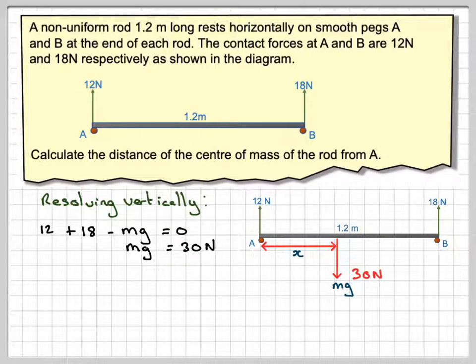We've got a 30 newton force acting downwards at some distance from A. And what we need to do is find that distance. So we're going to let that distance be x.